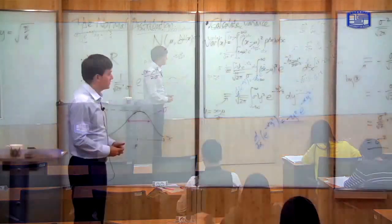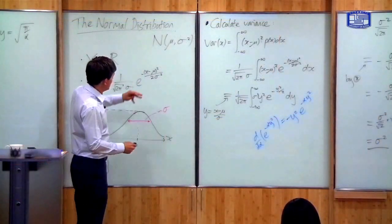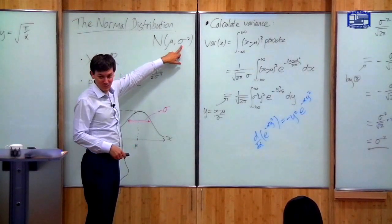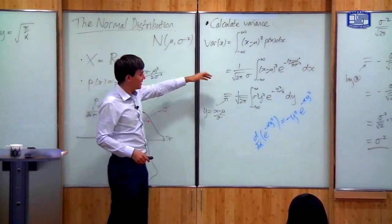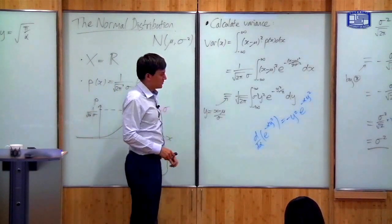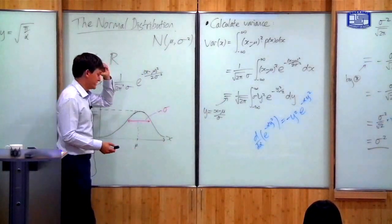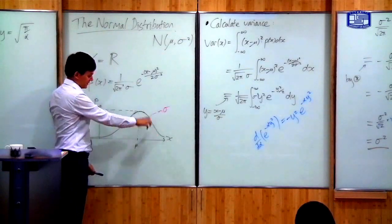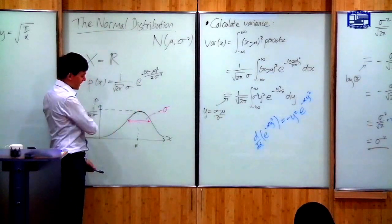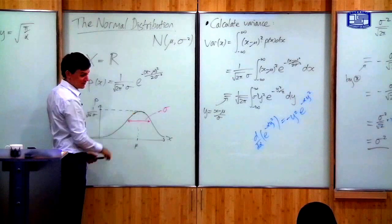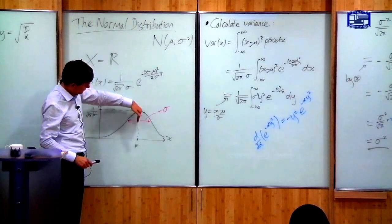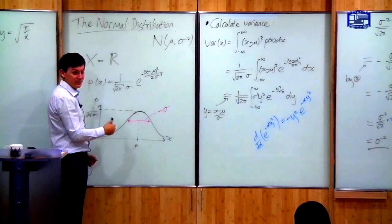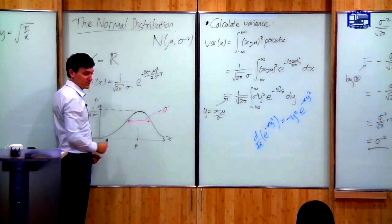So that's the normal distribution: it has a mean equal to μ and a variance equal to σ² — I've proved that. If you don't like the calculation, just remember the result. This picture is called a bell curve: it's symmetrical around the mean, decays exponentially on either side of the mean, and the width is proportional to σ.